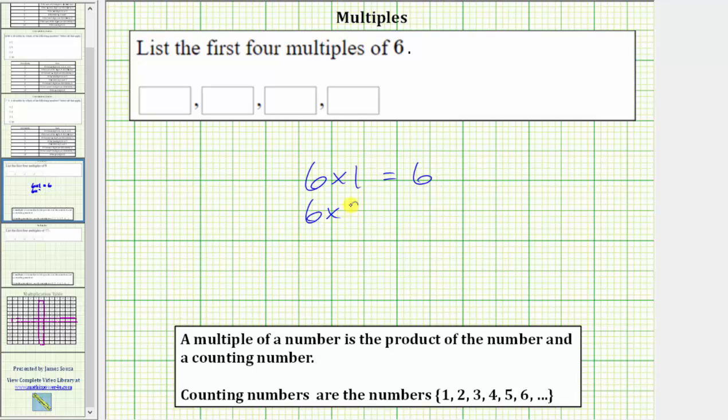The next multiple is six times two, which is 12. The next multiple is six times three, which equals 18. And the fourth multiple of six is six times four, which equals 24.